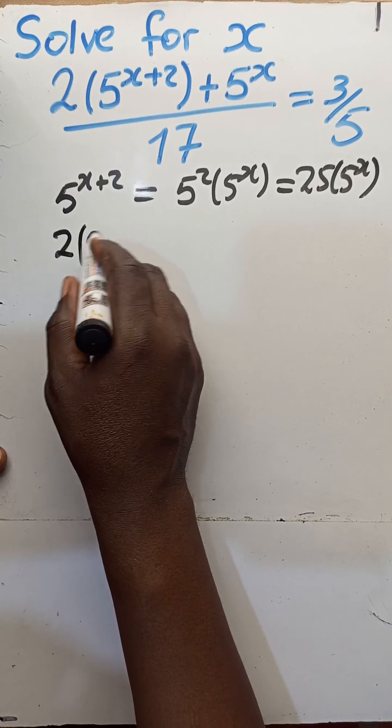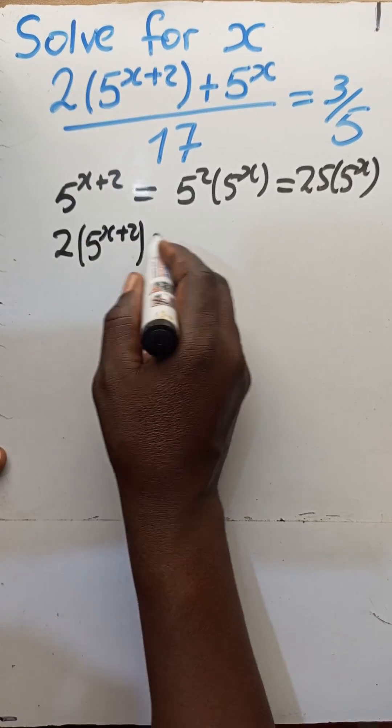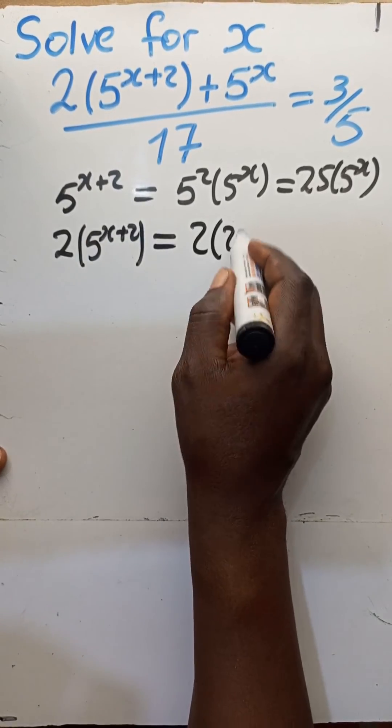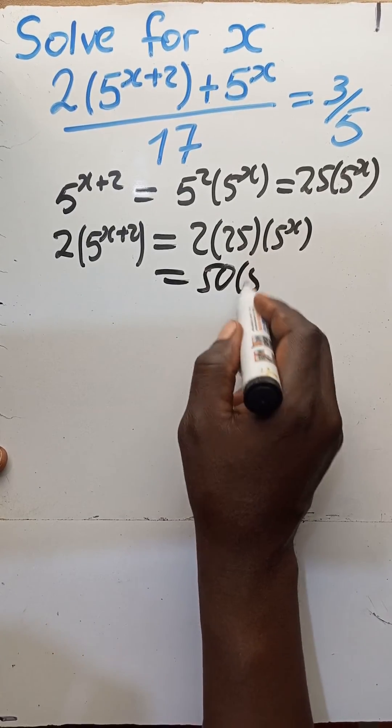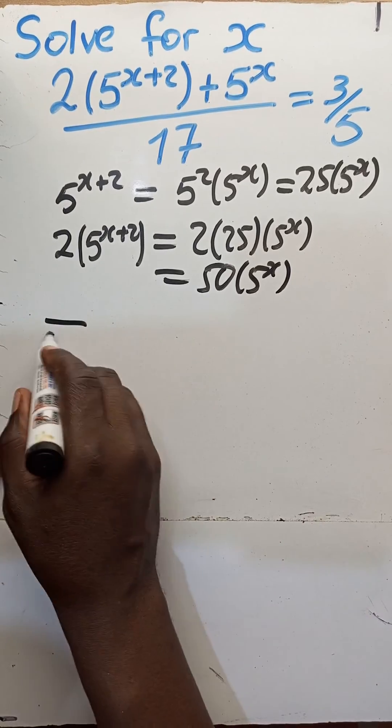2 times 5 to the x plus 2 would therefore be 2 times 25 times 5 to the x, which is 50 times 5 to the x.